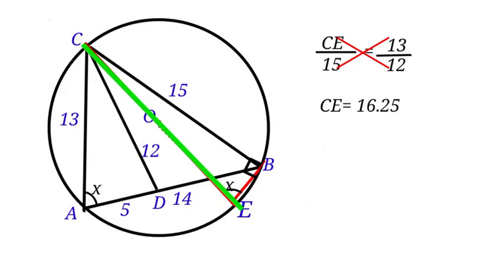For us to find the radius, we have to divide 16.25 by 2 and that will give us 8.125 units. The radius of this circle is 8.125 units.